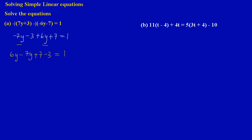We have positive 6y minus 7y. The face value of the positive number is 6 and the face value of the negative number is 7. The answer takes the sign of the number with the larger face value — the negative number, which is 7 — so 6 minus 7 gives negative 1y, or simply negative y. And 7 minus 3 gives 4. All of that equals 1.